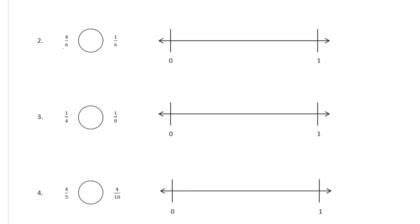Now we're looking at denominators of six, so we need sixths. That's going to look like the halfway mark there, and now I need thirds for each half. It's about as good as I'm going to get it — those are not very great, but I'll go with it. There, that's better.